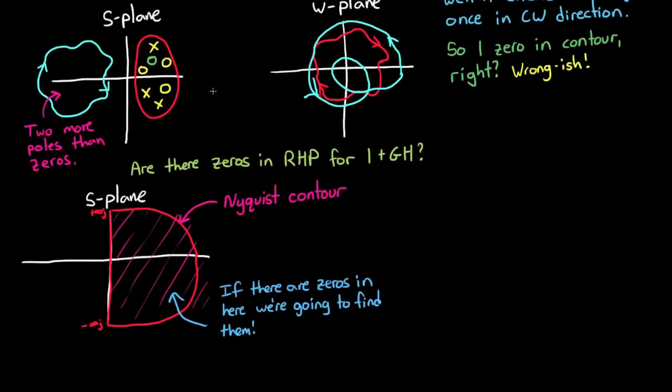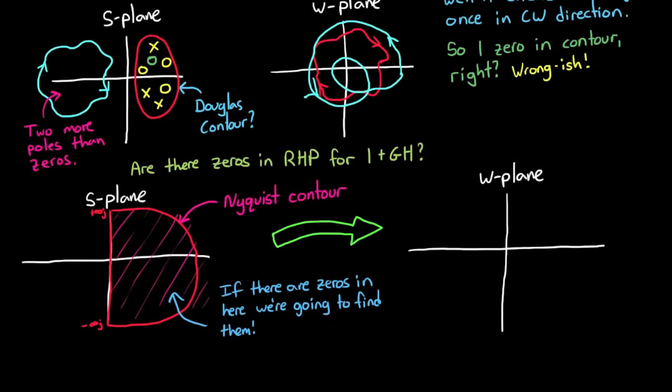All those other contours we drew didn't have a name. So maybe I'll call one like the Douglas contour or something. But when you map the Nyquist contour into the w-plane, you get what's called the Nyquist plot. It's all those squiggly graphs I plotted in MATLAB earlier.